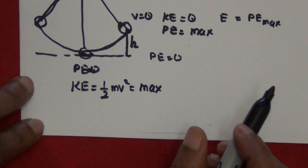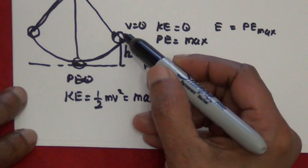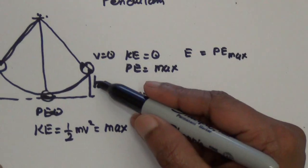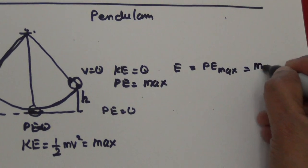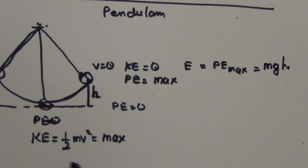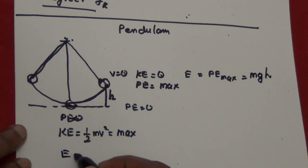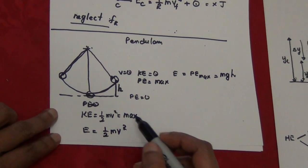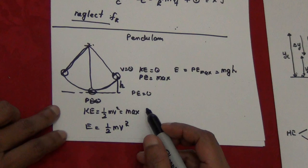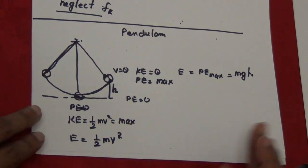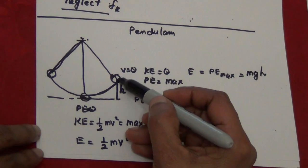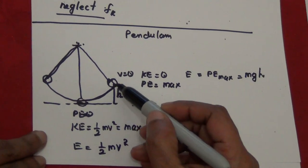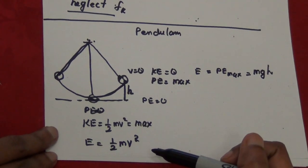At any point you can find the total energy. So these two examples — the skier and the pendulum — show how to use conservation of energy: pick an initial situation and a final situation, and set total energy at initial equal to total energy at final.